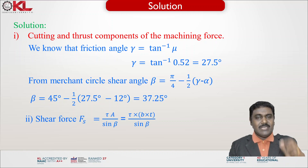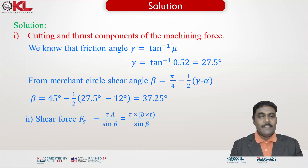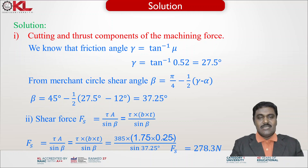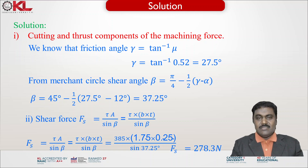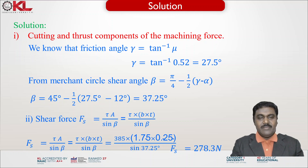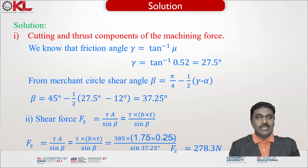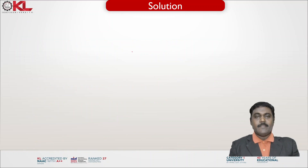Now the shear force can be found since the shear stress is given. The shear stress equals shear force divided by the cross-sectional area of the shear plane, so the shear force Fs = τ × b × t / sin β. Substituting τ = 385, b = 1.75 mm, t = 0.25 mm, and β = 37.25°, the shear force is obtained as 278.3 Newtons.